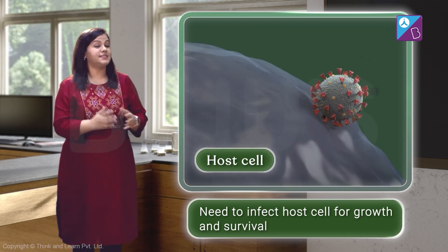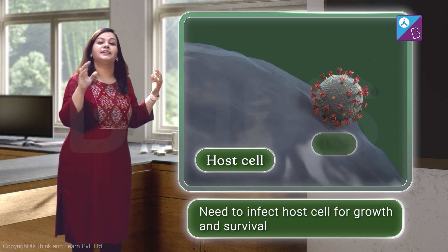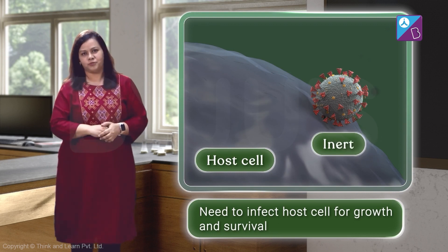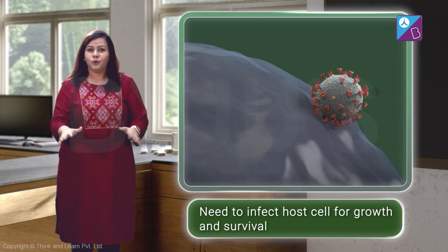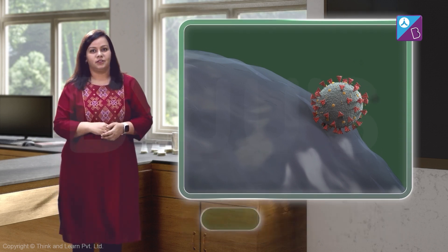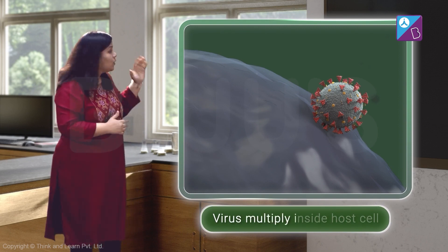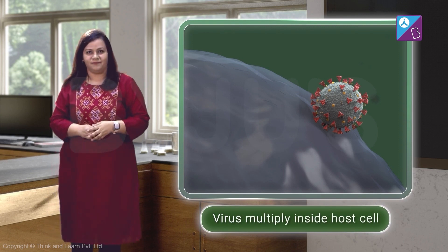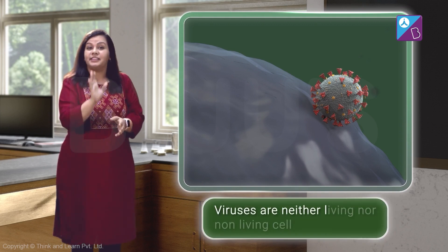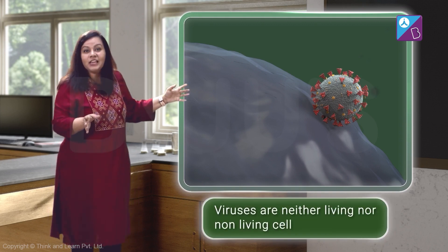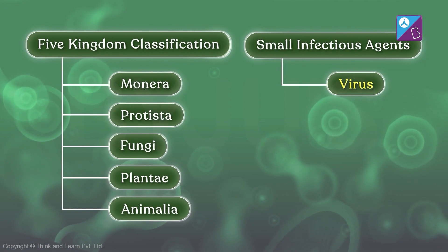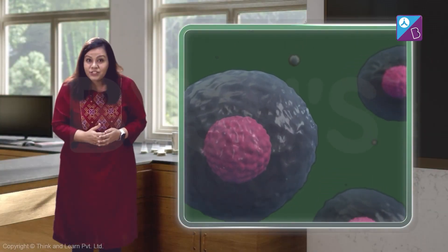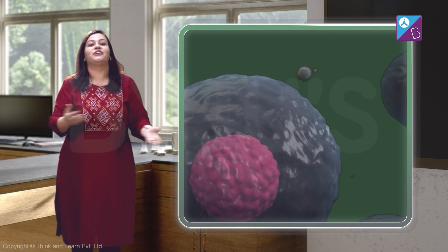When the virus is outside its host cell, it is completely inert, like an inanimate object. This is why we can't call it living. But we can't call it non-living either, because it can reproduce and multiply when it is inside a host cell. And since viruses are neither living nor non-living, they did not find a place in Whittaker's Five Kingdom classification. But they couldn't care any less — viruses never really found the need to become independent living beings.